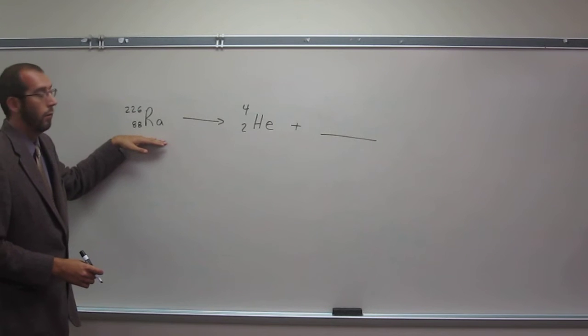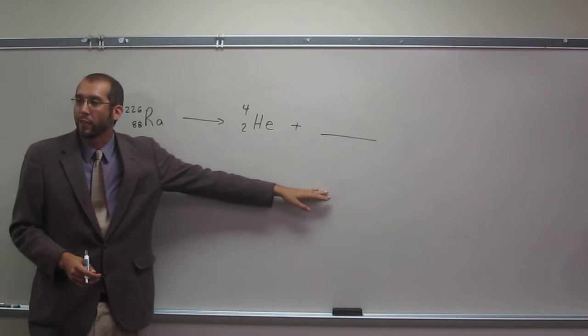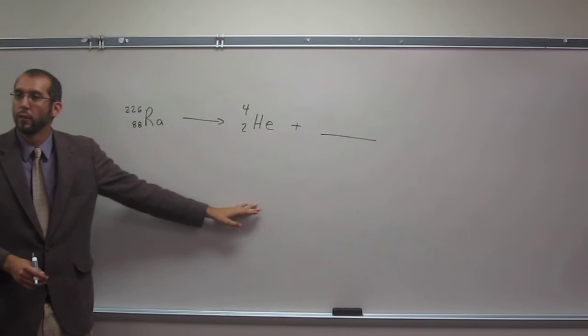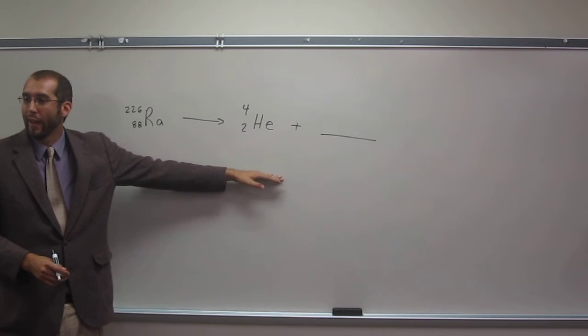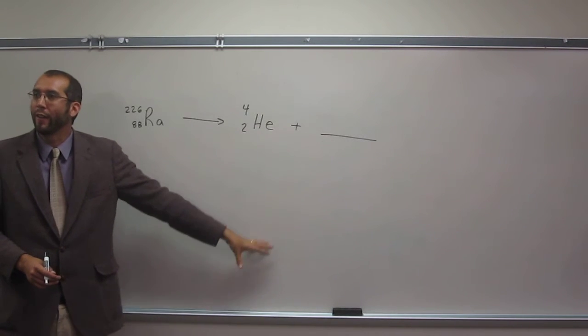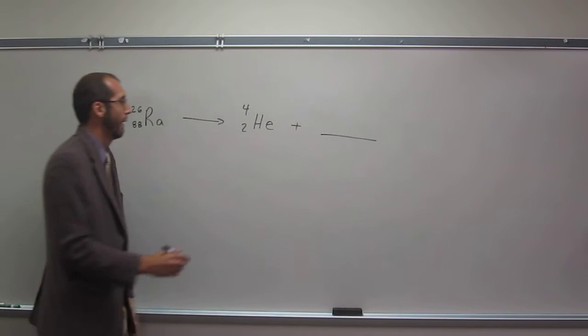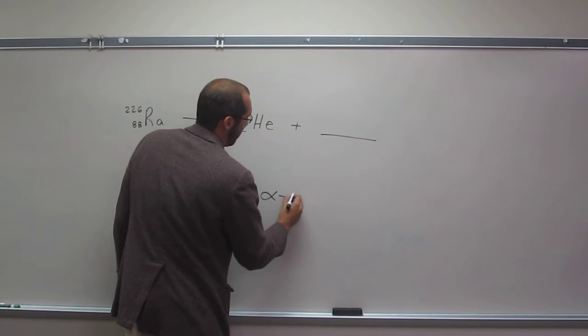This is radium. And what type of decay is it going through here? What type of particle is it? An alpha particle. So this is called alpha decay. So this is an alpha decay process.